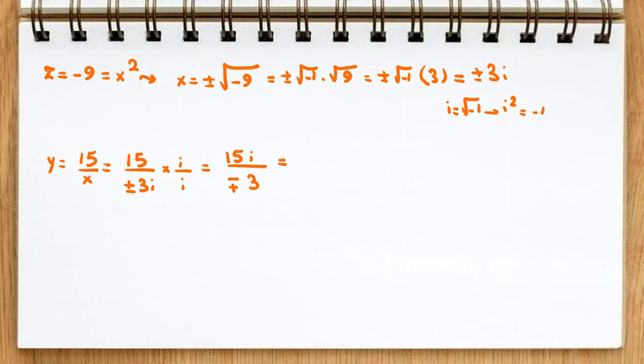The denominator will be minus plus 3. Okay, so it will be minus plus 5i. So in this case, x and y: if x is 3i, it will be negative 5i. If x is negative 3i, it will be plus 5i.